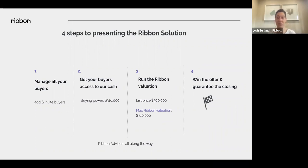The platform is made to be super easy and self-serve. You have a Ribbon advisor assigned to you when you create an account — they're your go-to for all things Ribbon. They can help expedite valuations; priority valuations for buyers already in our system with buying power set turn around in a few hours, so you can get an offer out the same day. Once you have the buying power and valuation, you're ready to make a Ribbon offer.